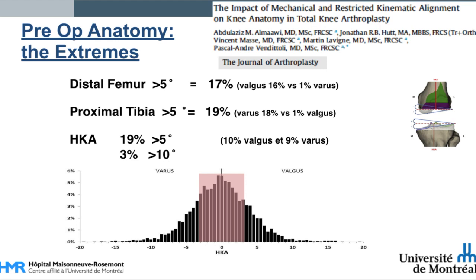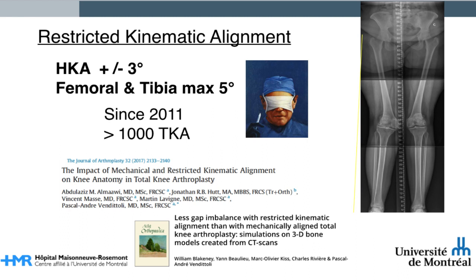From a group of 4,800 patients scheduled for total knee arthroplasty, we evaluated the number of cases where there were some extreme anatomies. In about 17%, there was a distal femur mechanical angle of more than 5 degrees, and on the tibial side it was 19%, resulting in a large HKA variation with 19% above 5 degrees and 3% above 10 degrees. That's why in 2011 I described the restricted kinematic alignment protocol, where we want to maintain the hip-knee-ankle angle within plus or minus 3 degrees and restrict the femoral and tibial bone cut to a maximum of 5 degree orientation in valgus or varus.